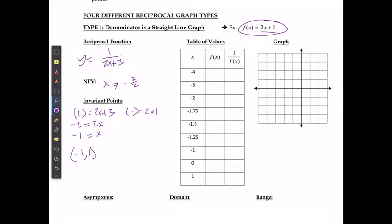If y was equal to negative 1, that's going to give me 2x plus 3, so negative 4 would equal 2x, which means that negative 2 would equal x, and I'm going to have the point of negative 2 and negative 1. Those are going to be my invariant points that I'm going to see on the graph.